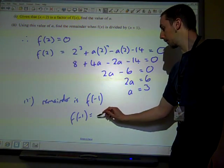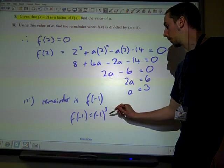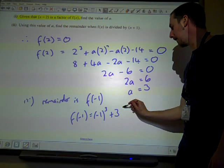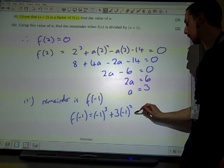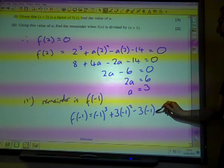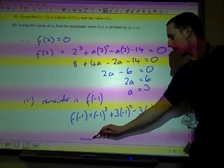f of minus 1 is minus 1 cubed plus a times minus 1 squared, that's 3 times minus 1 squared, minus a, so minus 3, that's minus 1, minus 14.